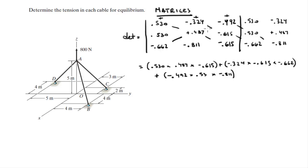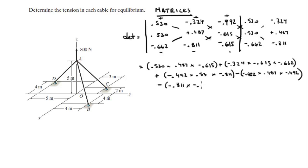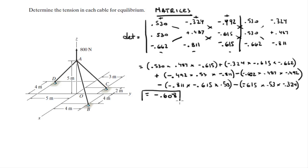After computing the negative diagonals, the last term involves 0.530 times -0.324. Plugging this entire expression into the calculator gives a main determinant of -0.608. From here the problem becomes much easier — it's basically going downhill.